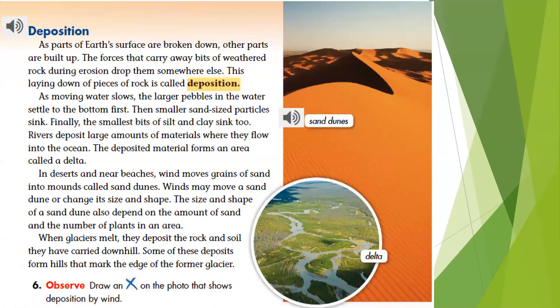As parts of Earth's surface are broken down, other parts are built up. The forces that carry away bits of weathered rock during erosion drop them somewhere else — this laying down of pieces of rock is called deposition. As moving water slows, the larger pebbles settle to the bottom first, then smaller sand-sized particles sink, and finally the smallest bits of silt and clay sink too. Rivers deposit large amounts of material where they flow into the ocean, forming an area called a delta — this is an example of a delta, where deposited material forms a lush area full of nutrient-rich rocks, sediments, and particles.